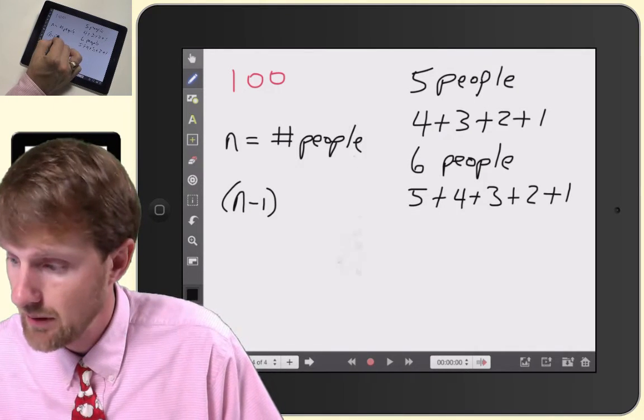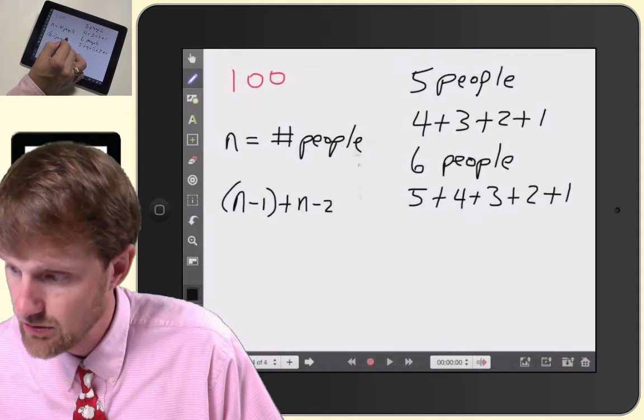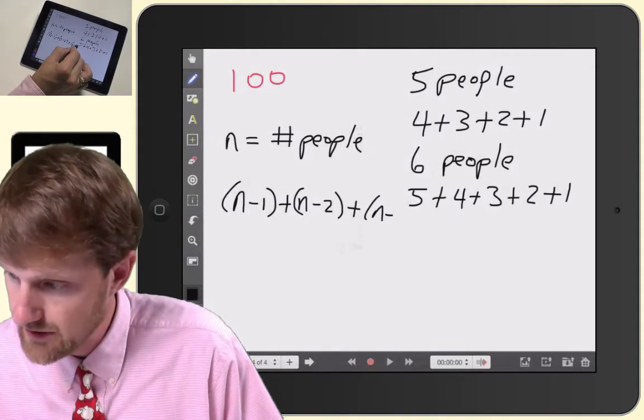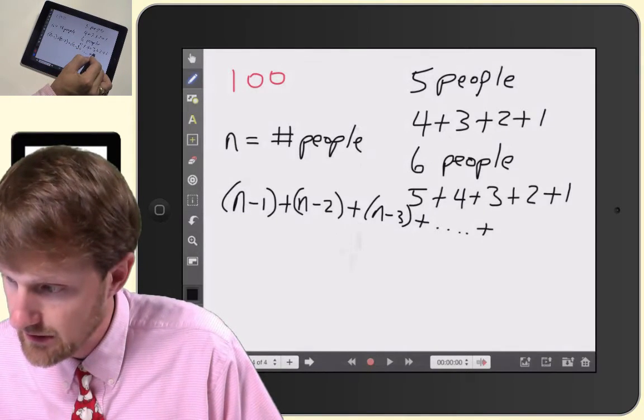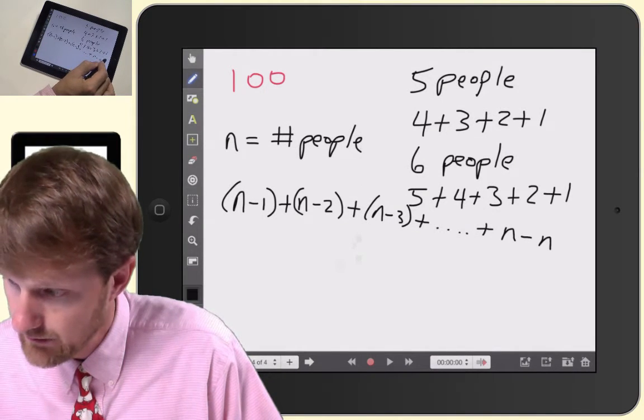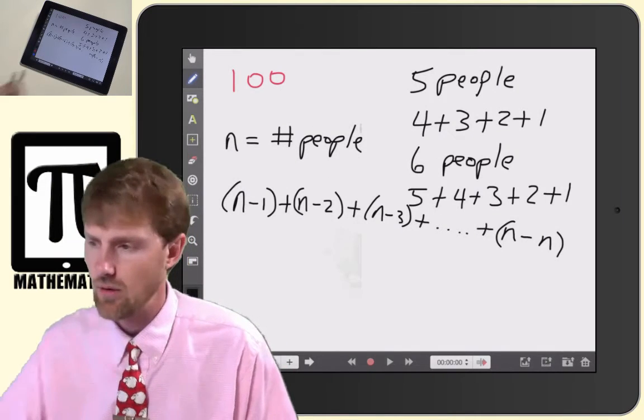I'm going to do n minus one plus n minus two plus n minus three plus dot dot dot plus n minus n because that gets us down to zero.